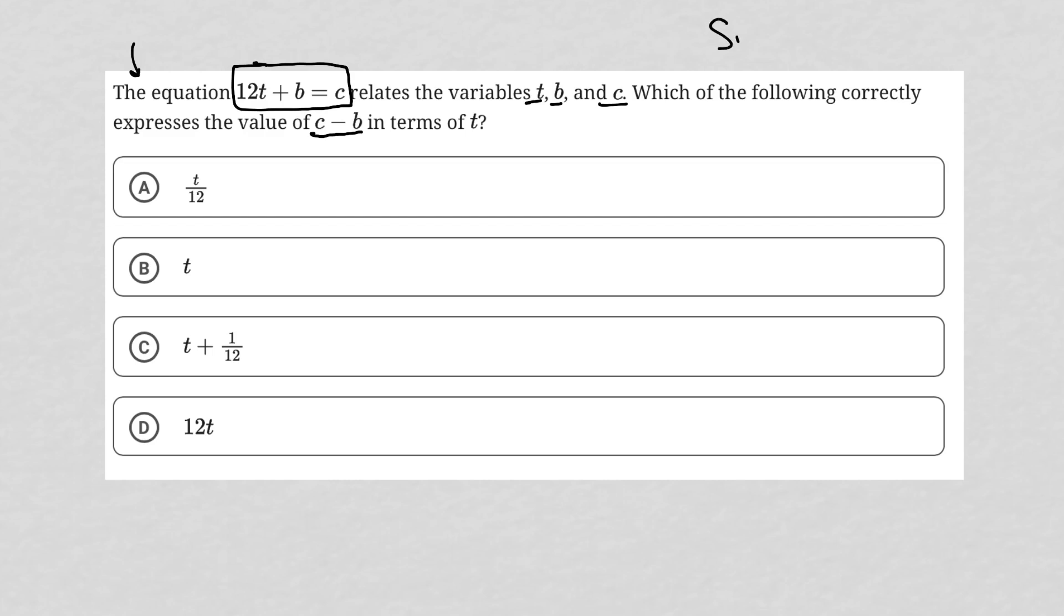So this is a simplify question. Simplify questions are typically between one and three lines long and will contain either an equation or expression. In this case, we have both. We have an equation here and we have an expression here with the c minus b.